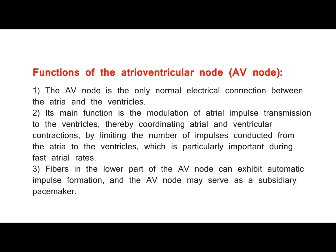Atrioventricular Block. Functions of the AV node: The AV node is the only normal electrical connection between the atria and the ventricles. Its main function is the modulation of atrial impulse transmission to the ventricles, thereby coordinating atrial and ventricular contractions by limiting the number of impulses conducted from the atria to the ventricles, which is particularly important during fast atrial rates. Fibers in the lower part of the AV node can exhibit automatic impulse formation, and the AV node may serve as a subsidiary pacemaker.